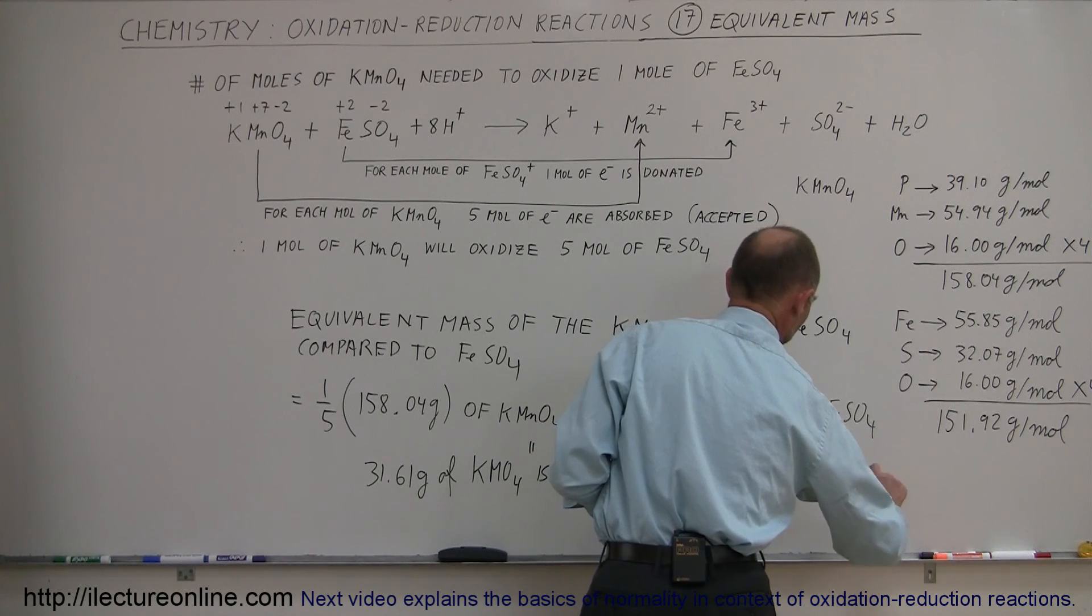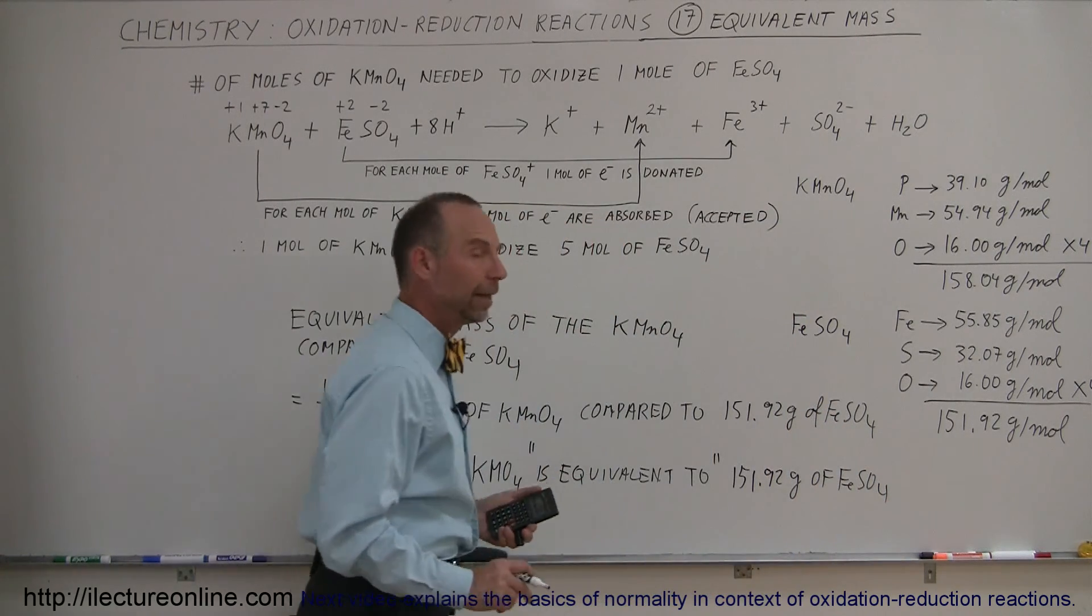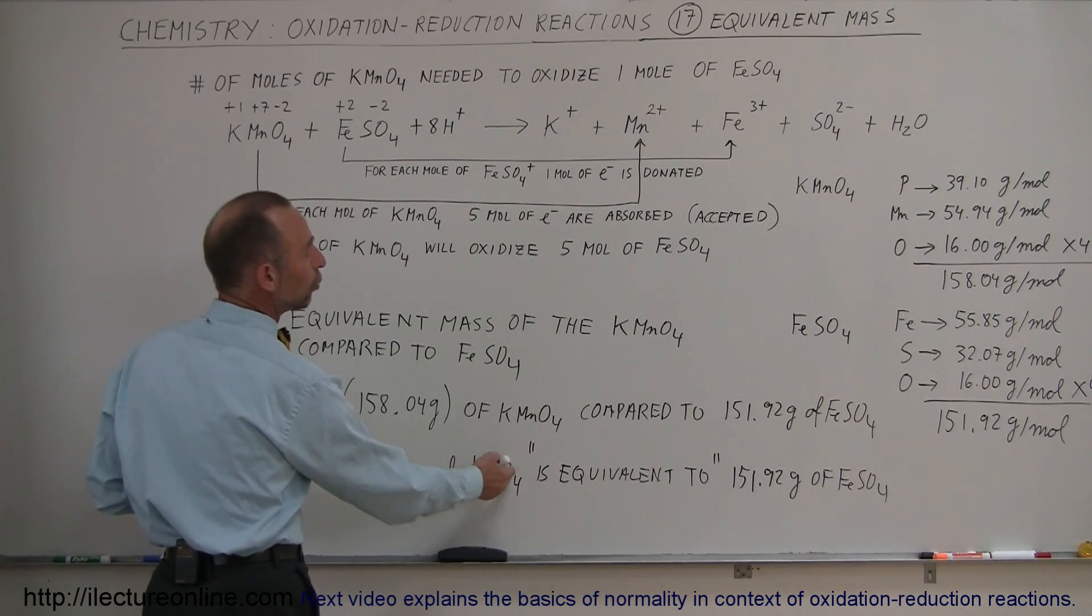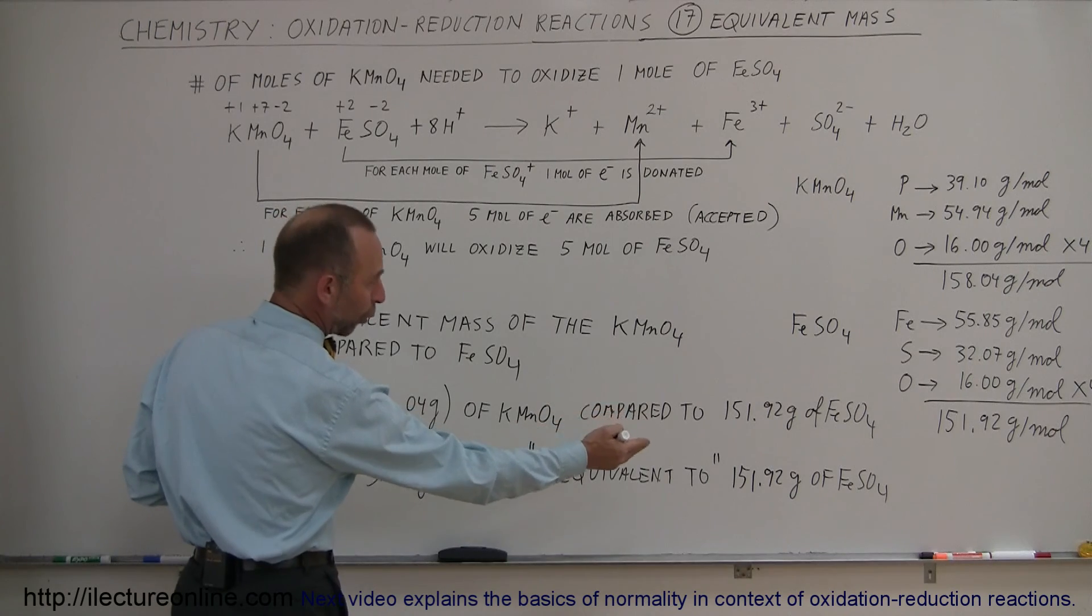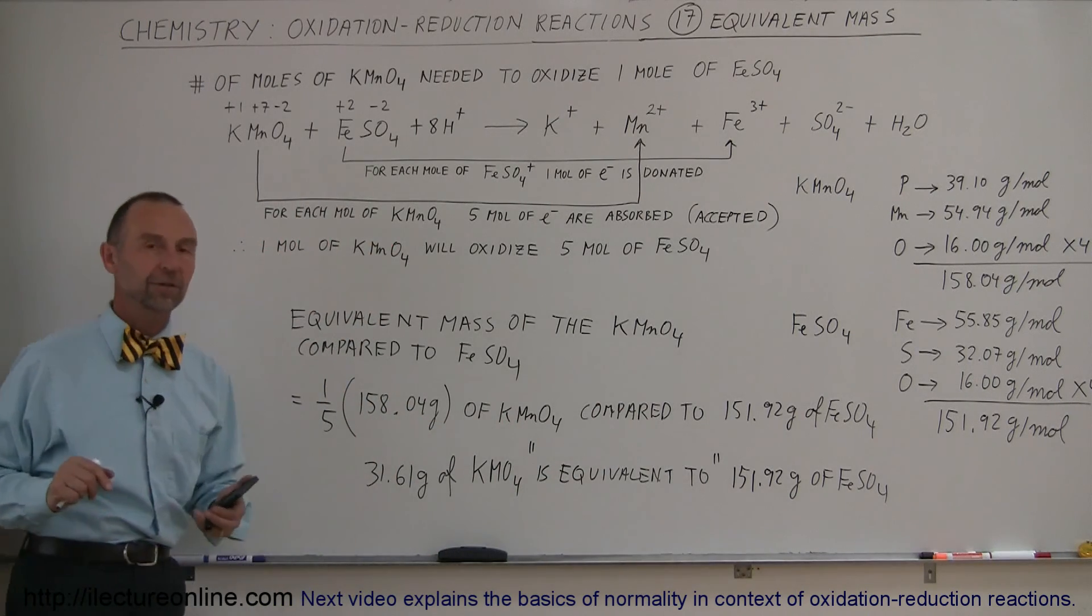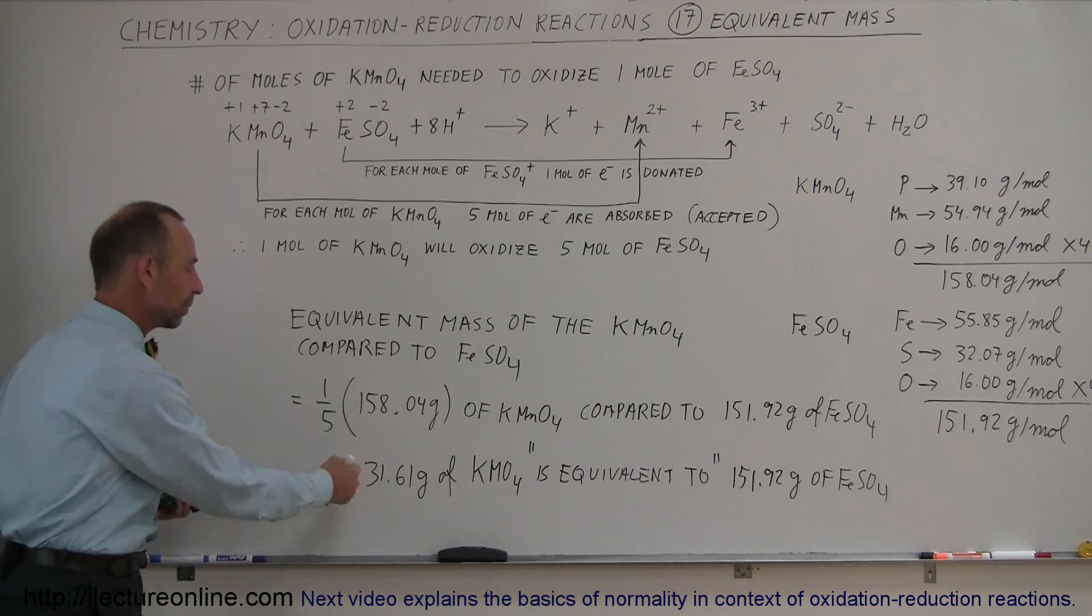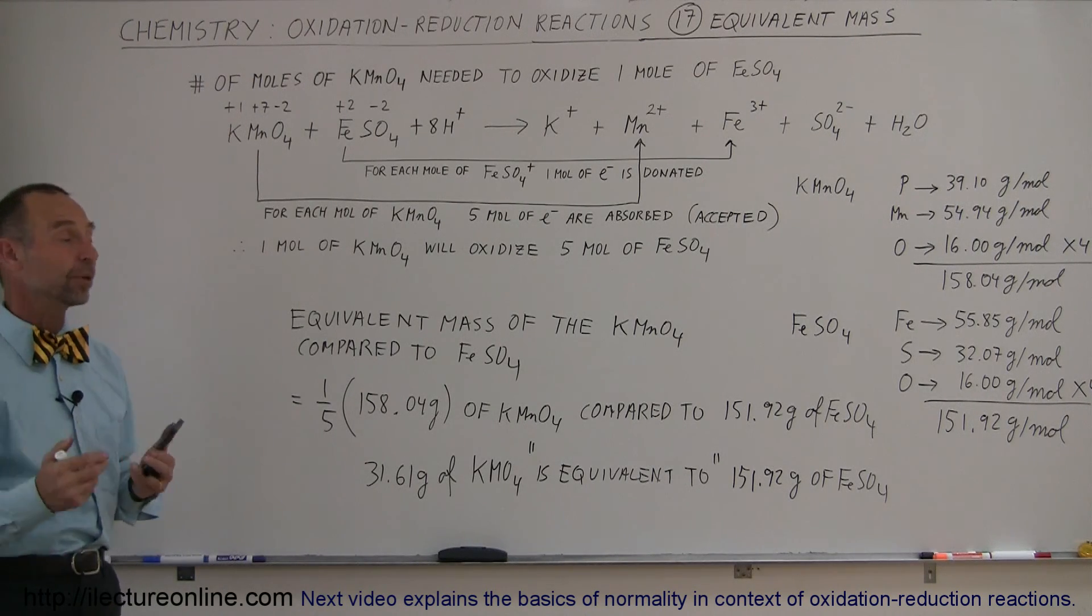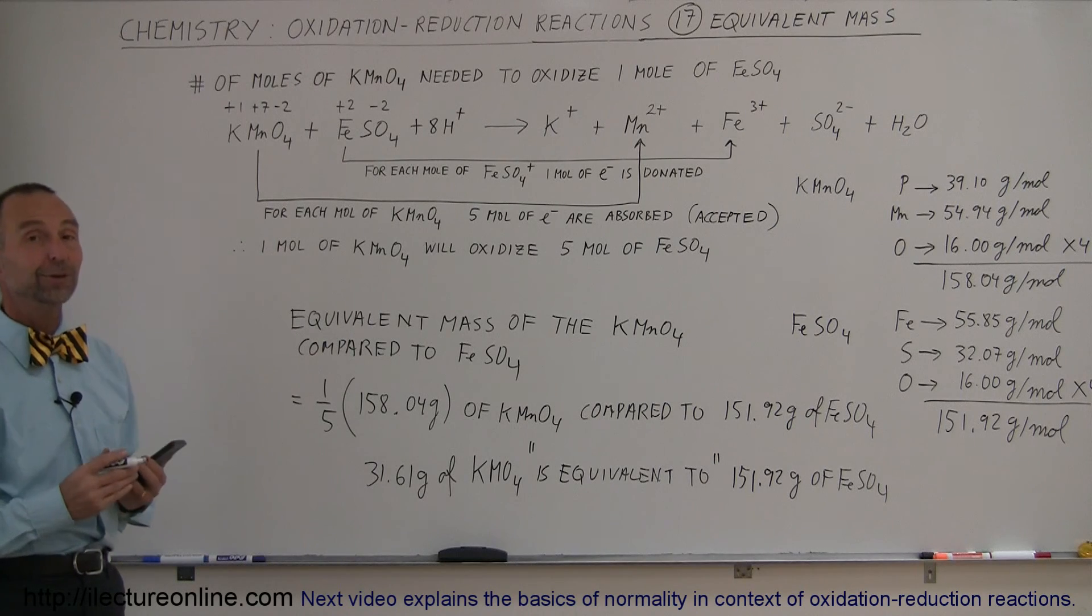Another way of looking at it is: how many grams of potassium permanganate do you need to oxidize one mole, or 151.92 grams, of iron sulfate? The answer would be 31.61 grams. That's what we call the mass equivalency in oxidation-reduction reactions. That's how you do that.